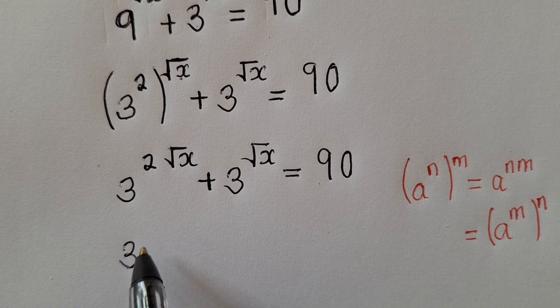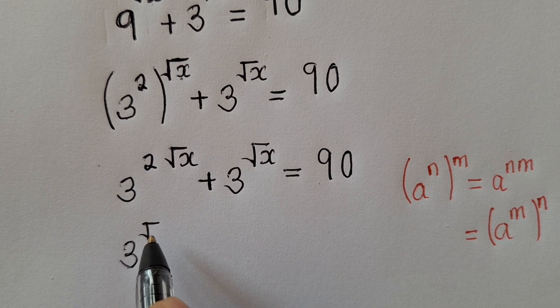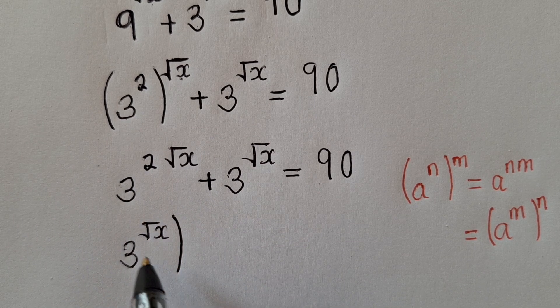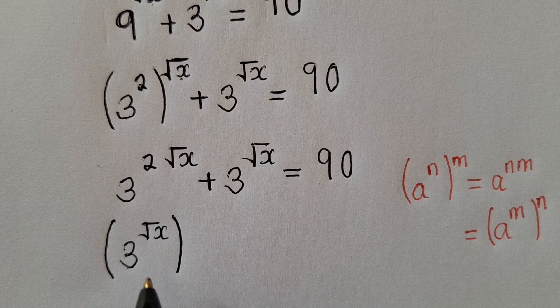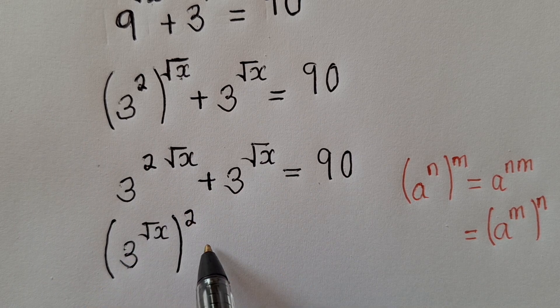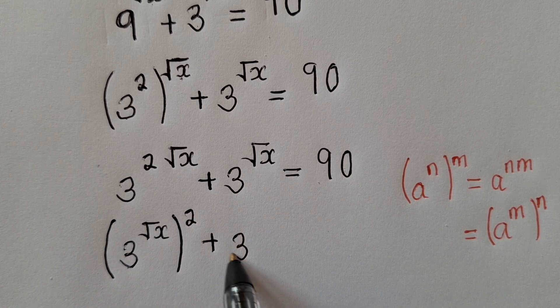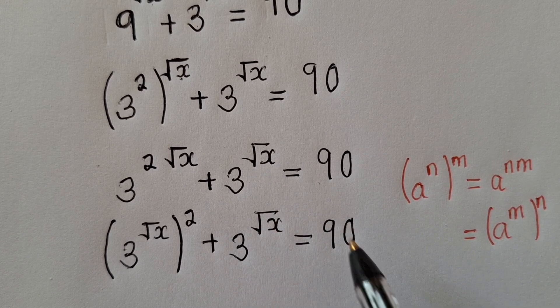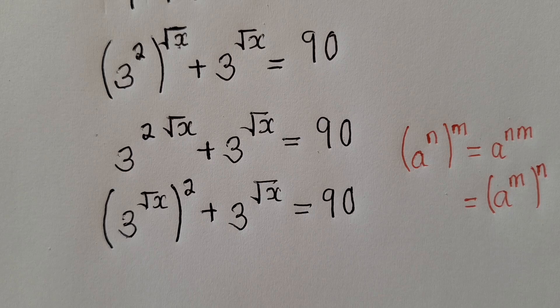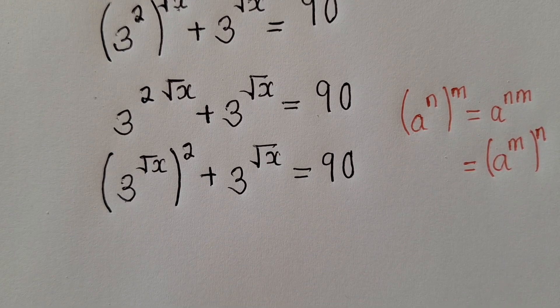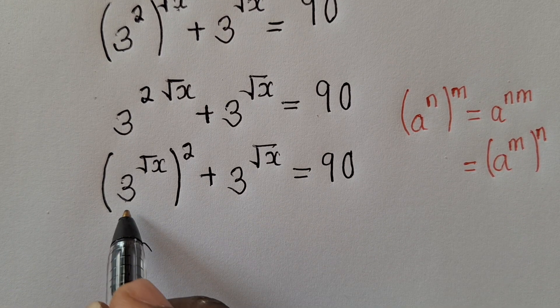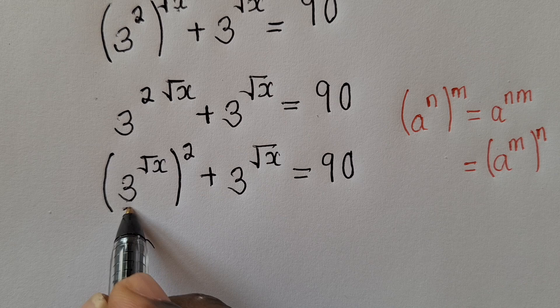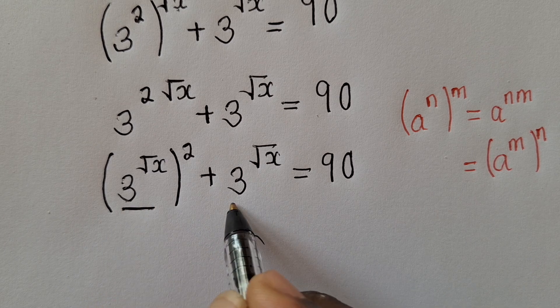Okay, I'll write this as 3 power square root of x, and then I bring the parenthesis power 2 here, plus 3 power square root of x is equal to 90. So the moment I do this, I'm able to see that what is here looks like what is here.